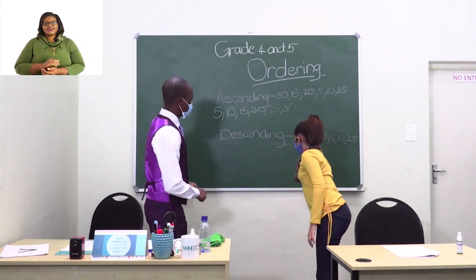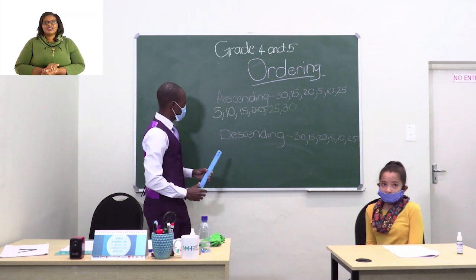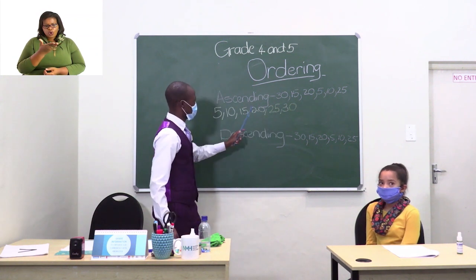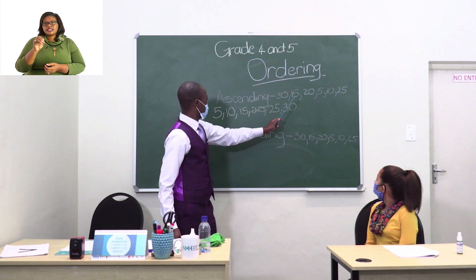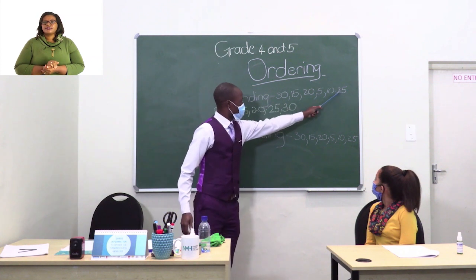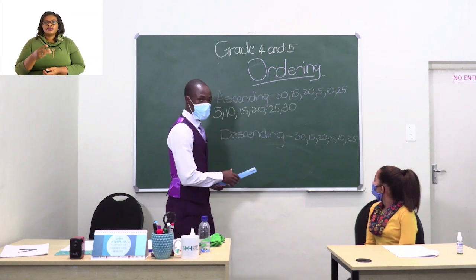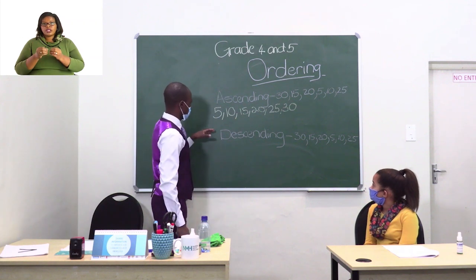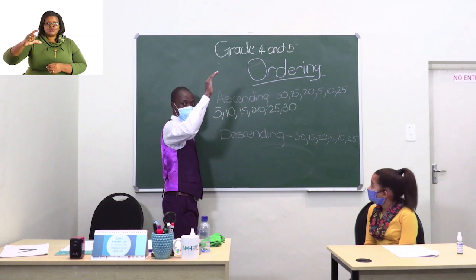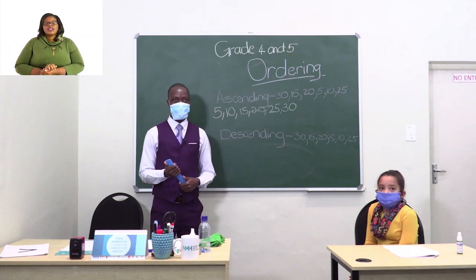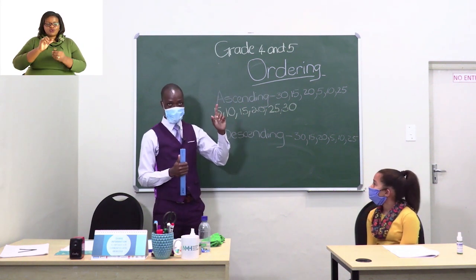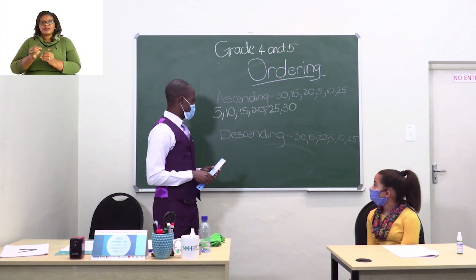Thank you very much, she did it very well. After arranging, you are supposed to check whether you managed to put all the numbers. The 5 is there, the 10 is there, 15 is there, 20 is there, 25 is there, 30 is there. If you look at these numbers, you see that their size is increasing as you go up — from 5 to 10, the numbers are going up. That is ascending order: values going up.